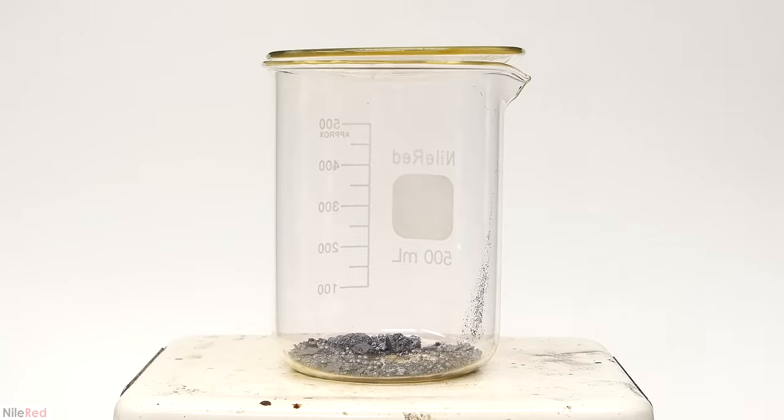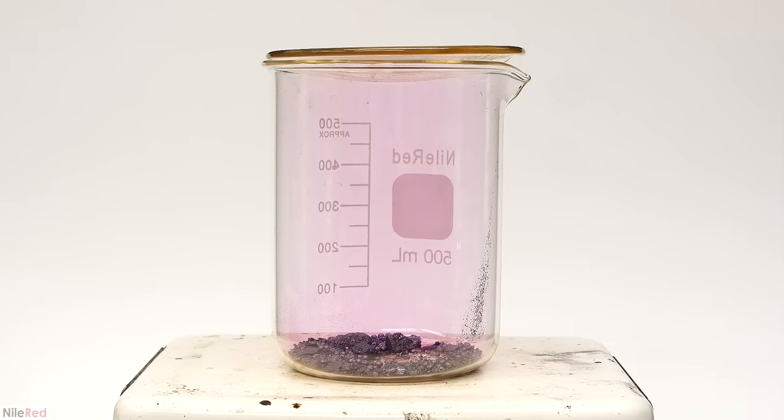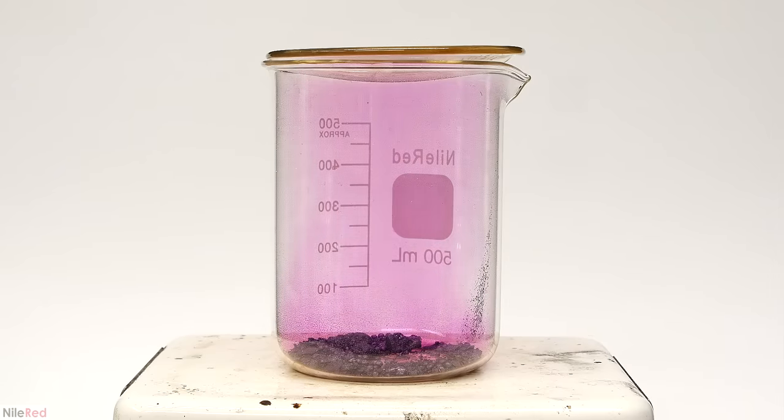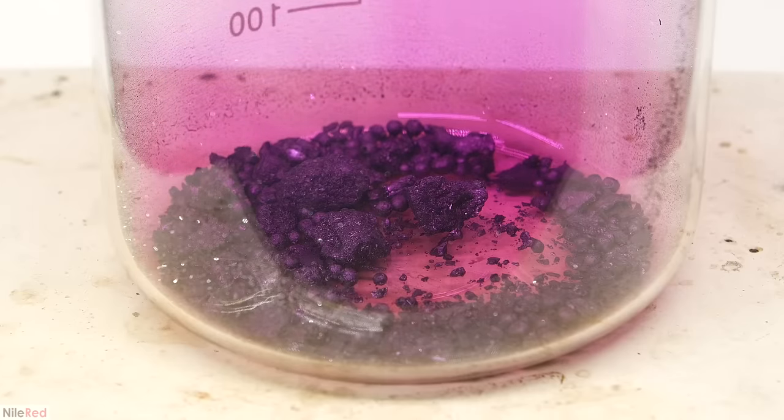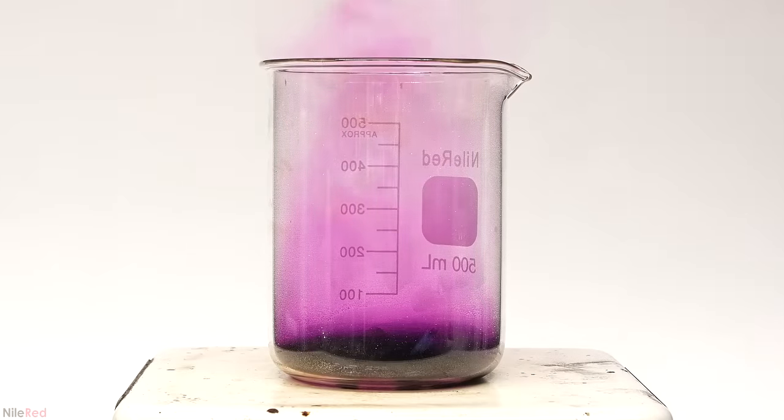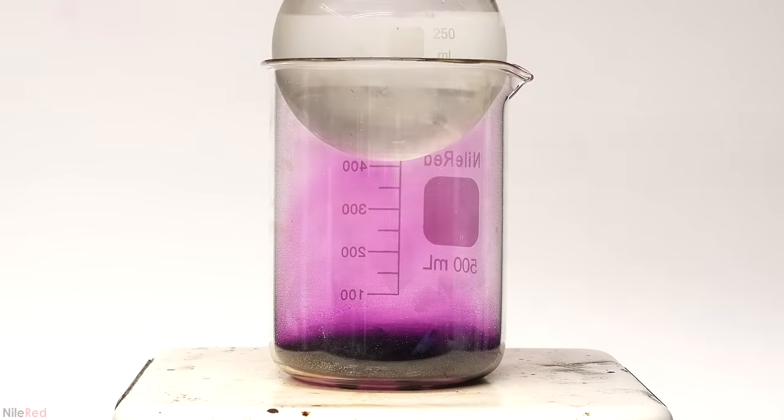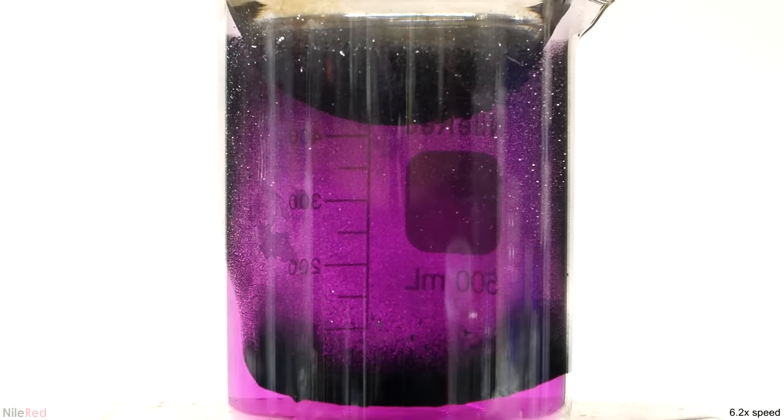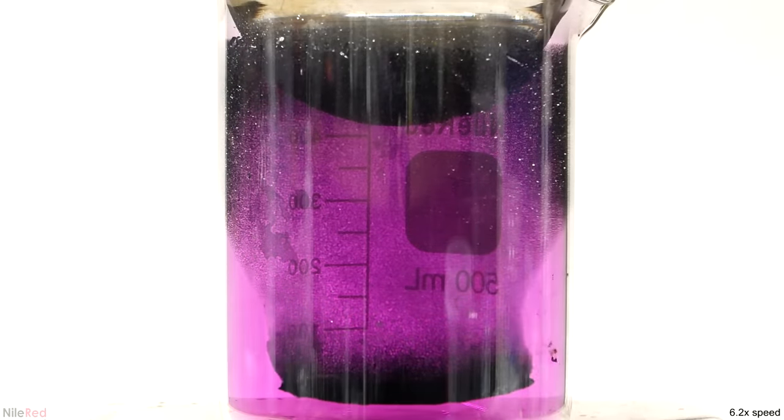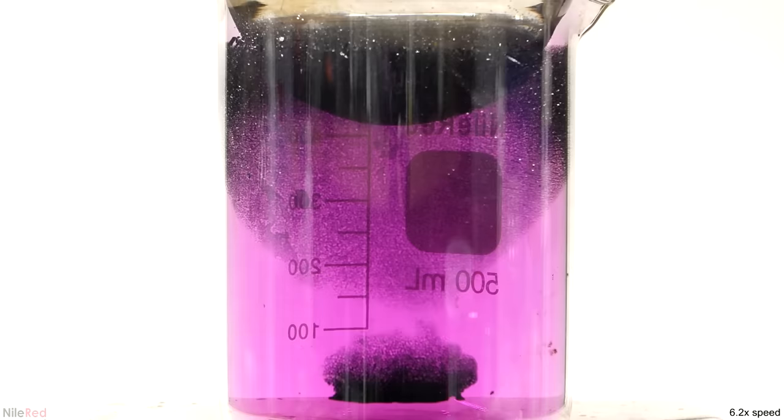As the iodine warms up, more molecules are able to make the transition from the solid to the gas phase, and a lot more vapor is given off. Then, I place a round bottom flask filled with cold water on top of the beaker. The iodine vapors will deposit on this colder surface and reform the iodine crystals.